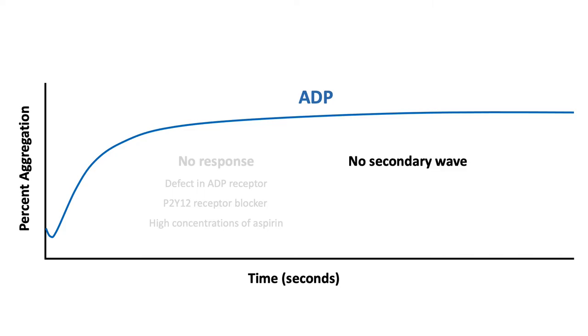If there is no secondary wave, it suggests a storage pool defect in which no granules exist, or a secretion defect in which the granules exist but are unable to be secreted.